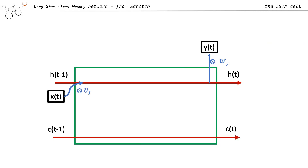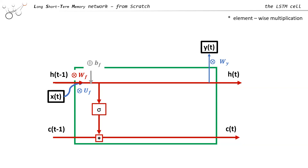Continuing with the structure from the RNN: we take Xt and multiply it with a learnable UF — and the index F will be explained shortly. We also multiply Ht with a learnable WF and add a bias. Then we pass this information to a sigmoid and multiply the result element-wise with the vector Ct. Both Ht and Ct are state vectors, so they must have the same shape.